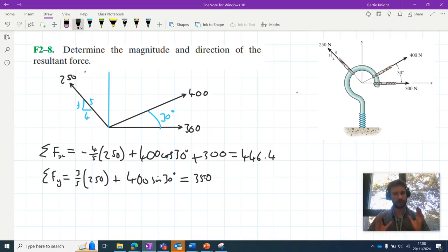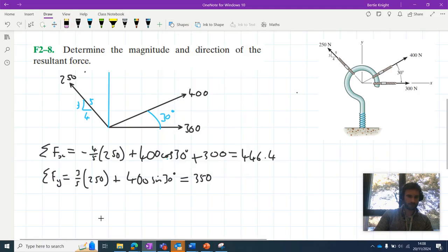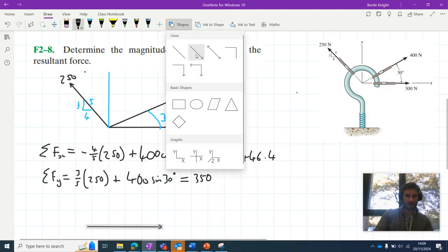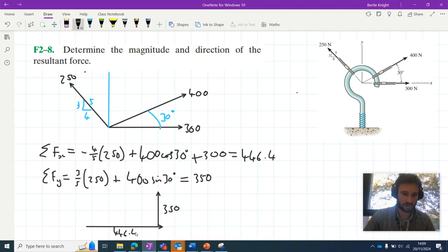And when we add that together, we get a nice 350. So what this is telling us then about the resultant force is that it's acting 446.4 to the right and 350 up.